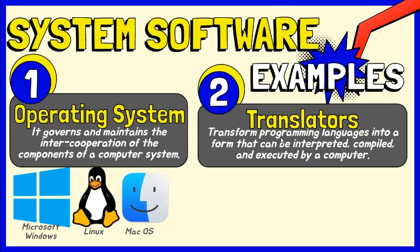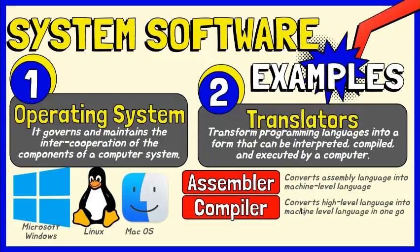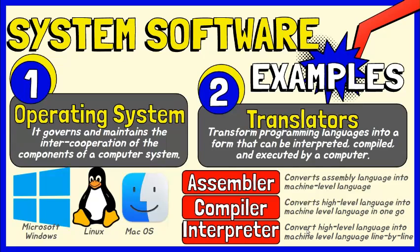Programming language translators refer to programs that transform programming languages written by developers into a form or a language that can be interpreted, compiled, and executed by a computer. The assembler is used to convert assembly language into machine language. The compiler is used to convert high-level language into machine language in one go. The interpreter is also used to convert high-level language into machine-level language line by line, thus execution time is low.